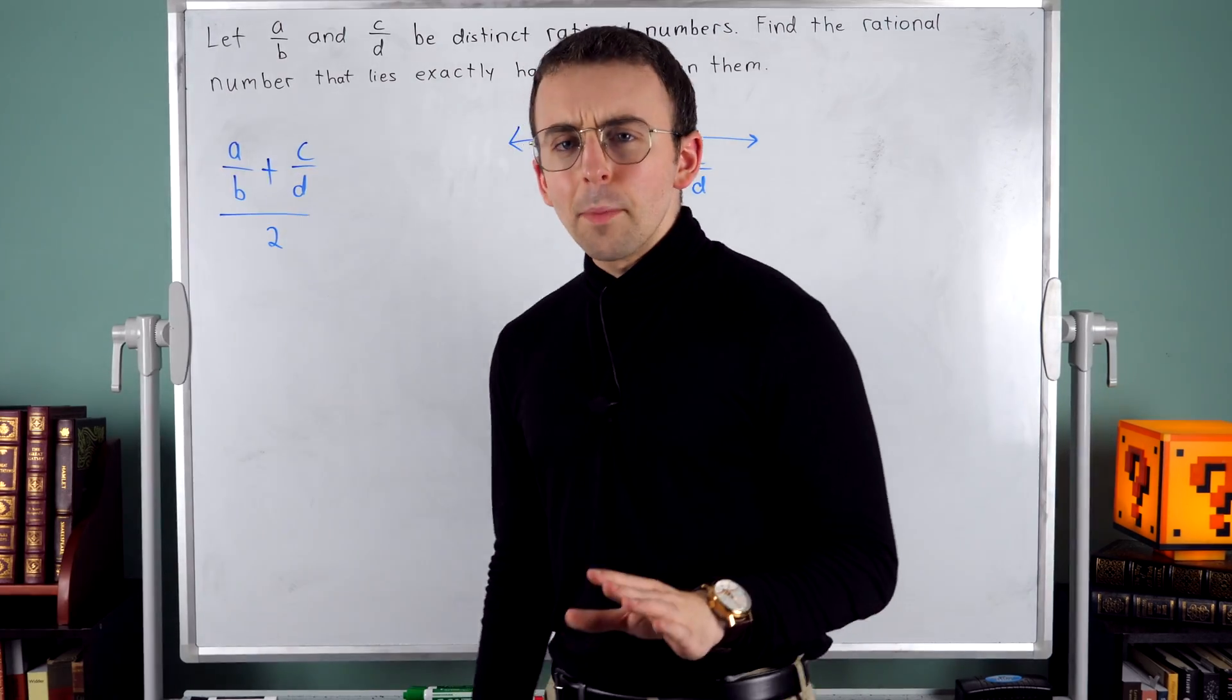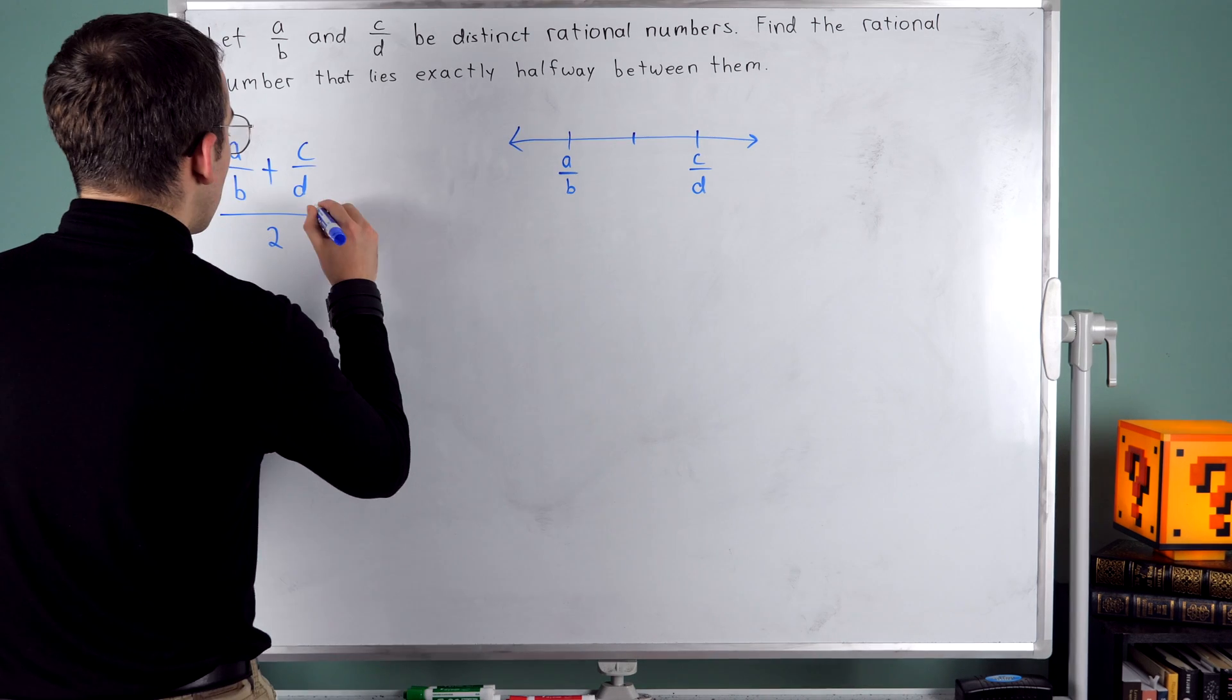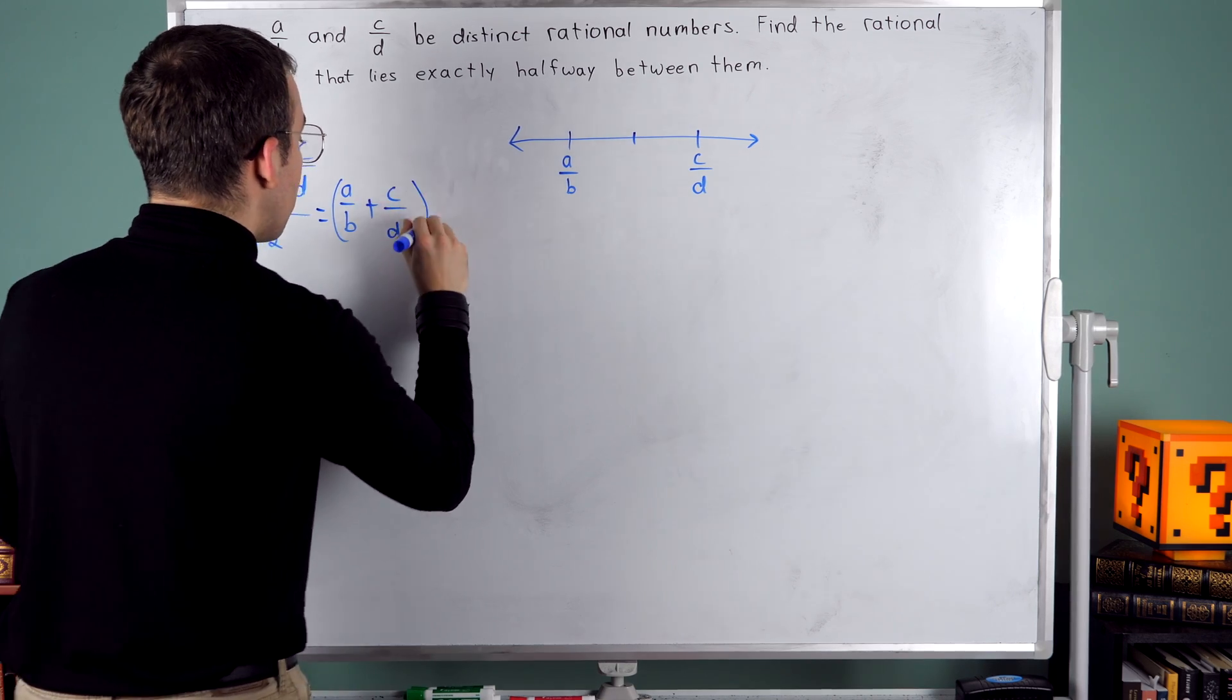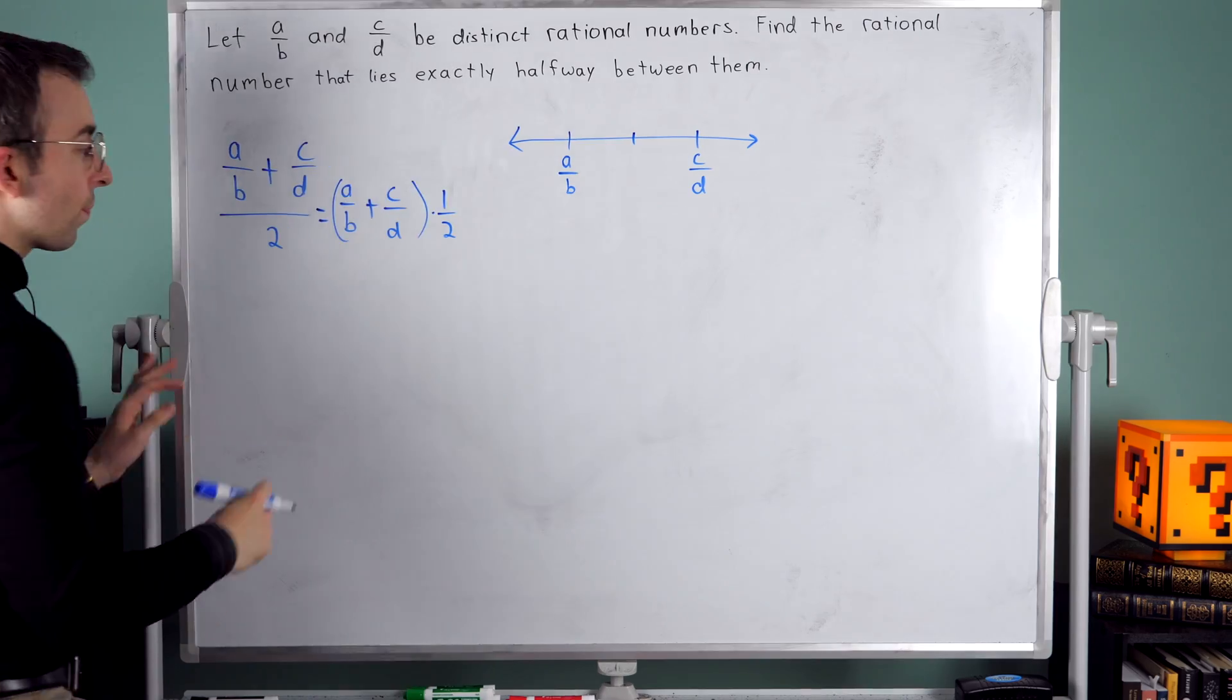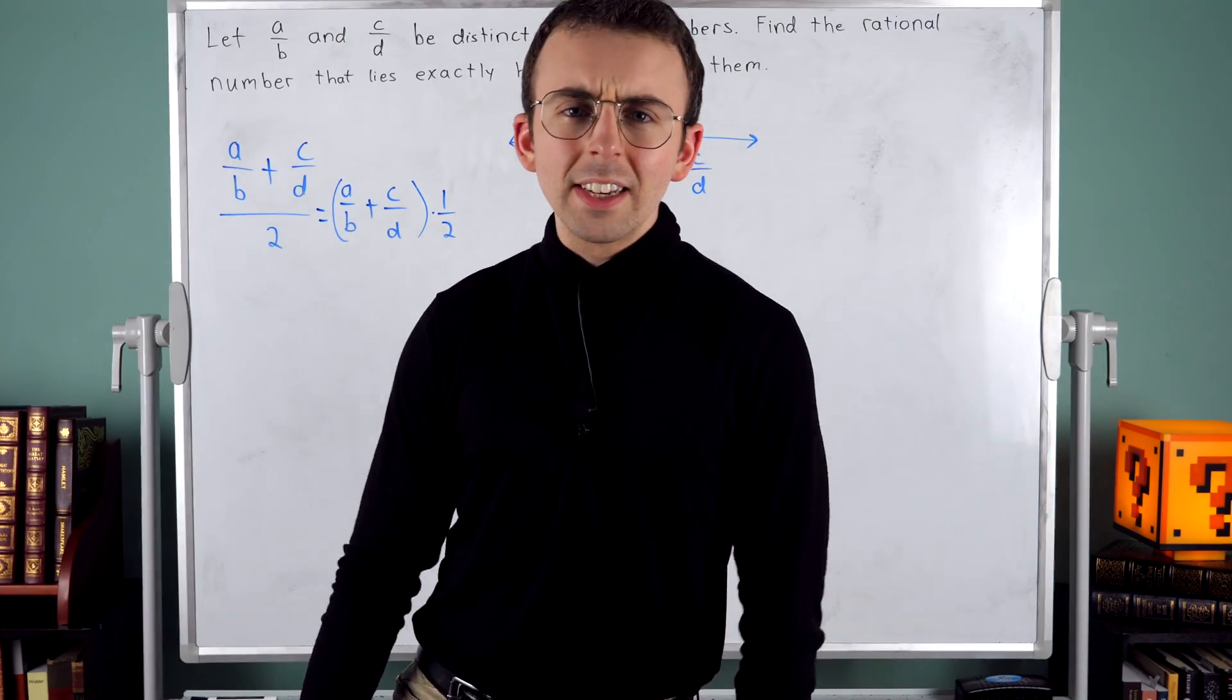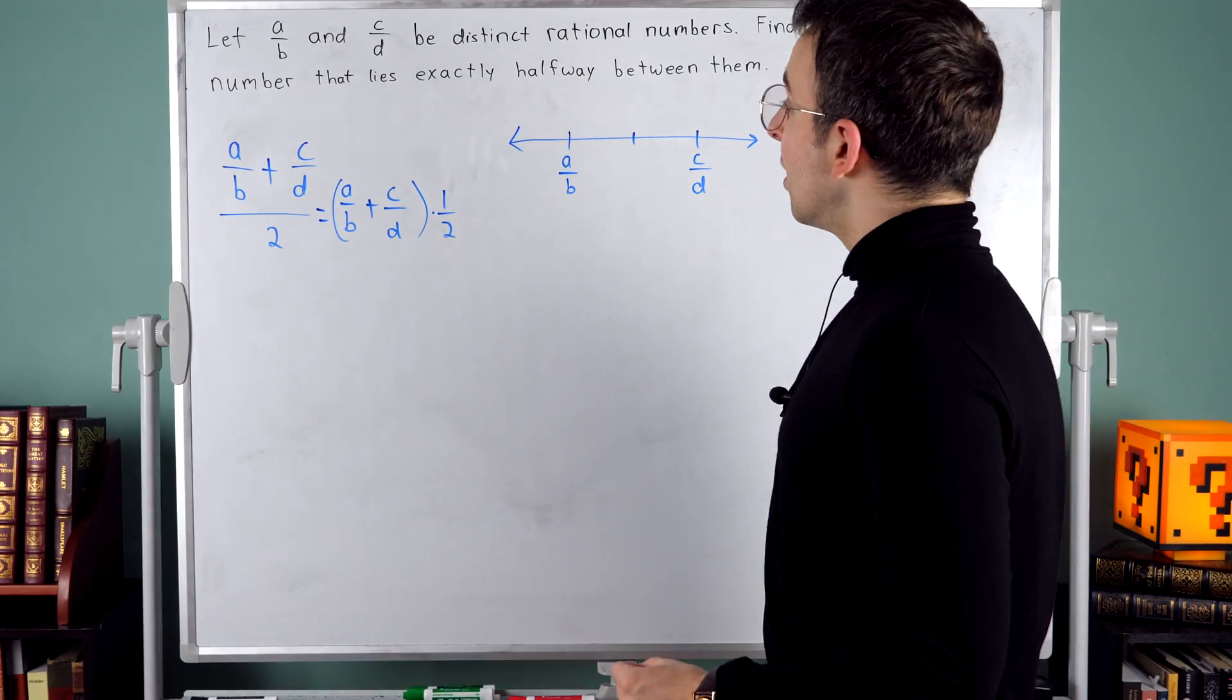Dividing by a number is the same as multiplying by the reciprocal. So this is equal to A over B plus C over D times the reciprocal of two. That's times one half. Then you could just distribute the one half through the sum and get some common denominators and simplify your expression and you would be done.